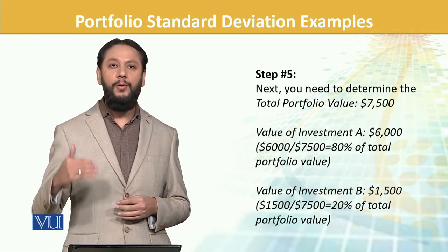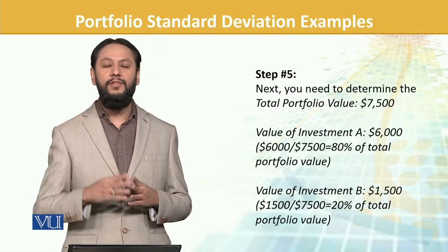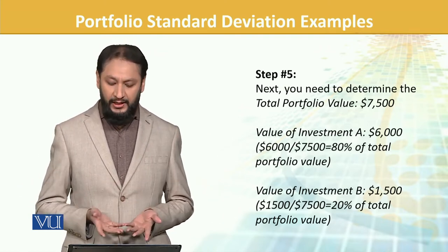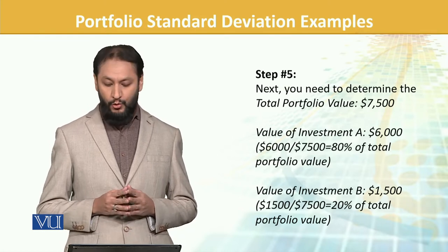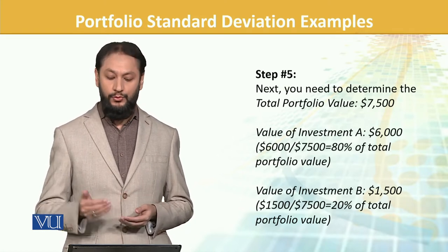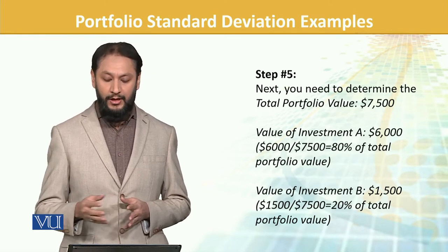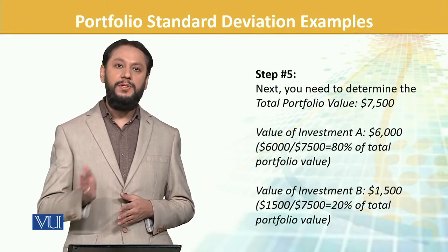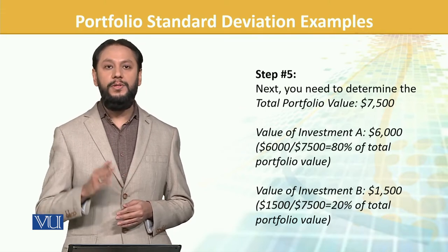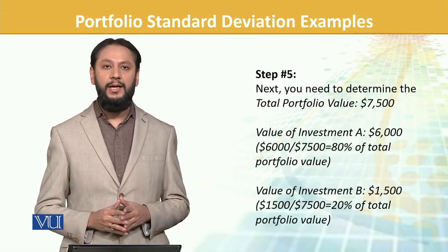So 6,000 and 1,500 in dollars — total is 7,500. When you have absolute values, calculating the weights of the portfolio should not be an issue. So 6,000 divided by 7,500 means we have invested 80% in A and 20% in B. So these are our weights.